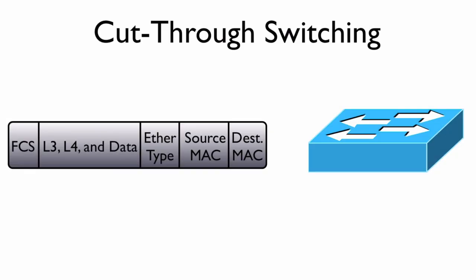Cut-through switching is a way for a switch to get minimal information about where a frame is destined and start forwarding that frame as quickly as possible.